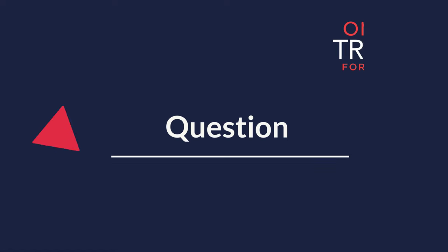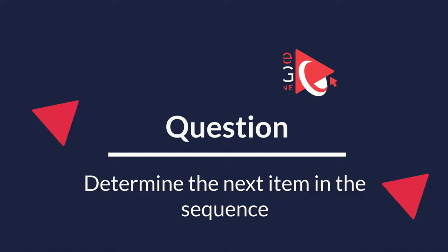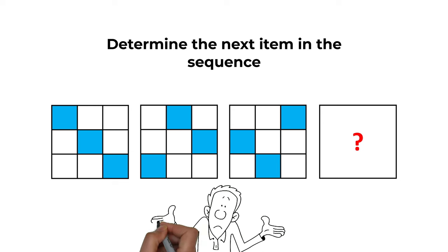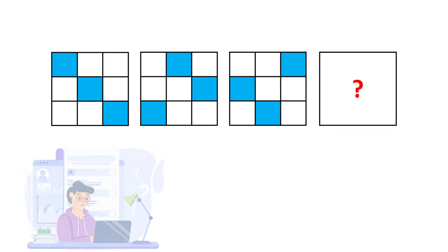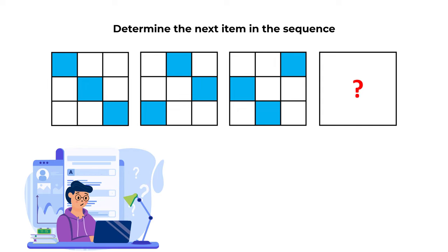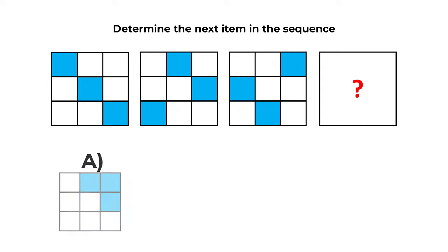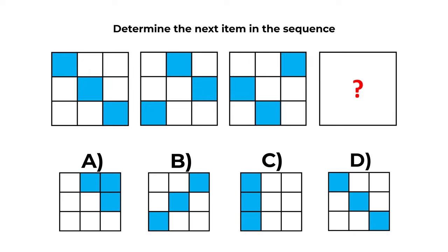Here is a very interesting problem that you might frequently get on the test. You need to determine the next item in the sequence. You're presented with a sequence of large squares, each containing nine small squares inside of different colors. You need to determine the next item in the sequence, and you have four different choices: A, B, C, and D. Do you see the answer? Give yourself 10 to 30 seconds to see if you can come up with the solution.